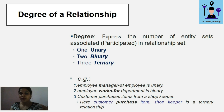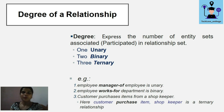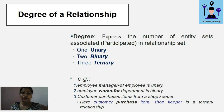An example of a unary relationship is 'employee manages employee.' Here, employee is the only entity participating in this relationship. From the employee set, one employee can be the manager of other employees — so only one entity is participating, making it a unary relationship.